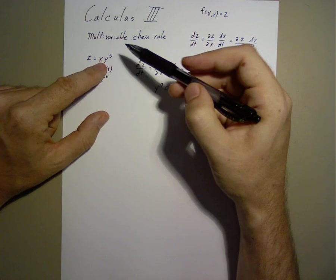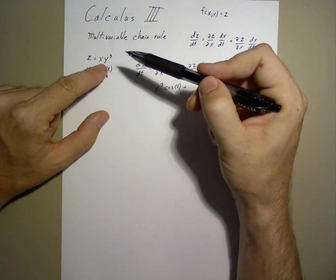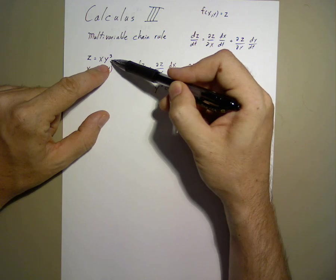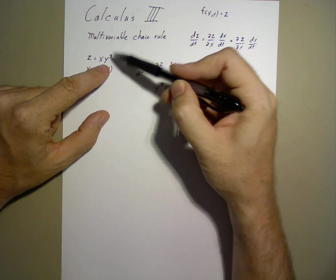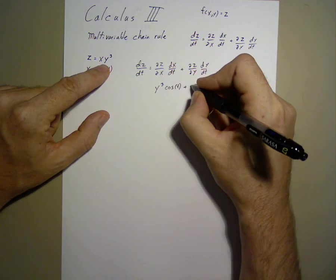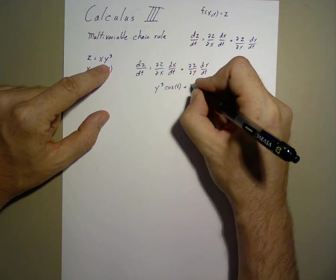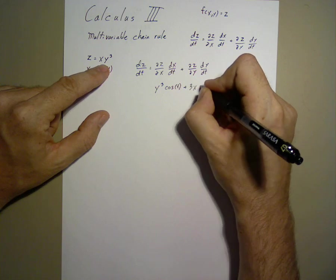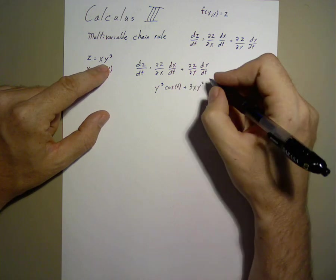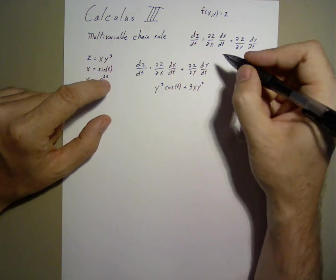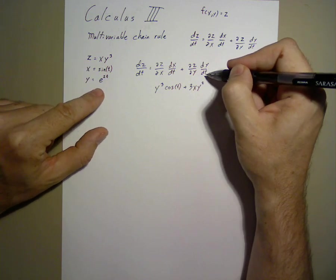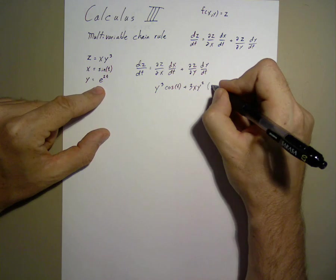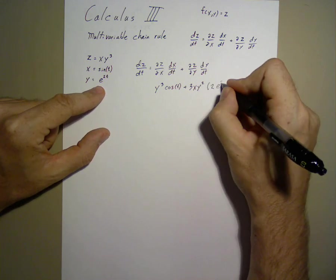When we take the partial derivative with respect to y, then we treat all other variables as constants, which makes taking derivative very easy. We get 3xy squared times the ordinary derivative of y with respect to t, which gives us 2e to the 2t.